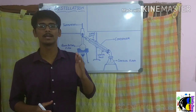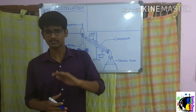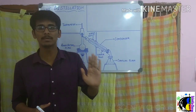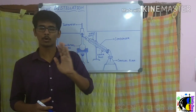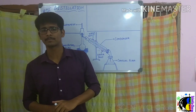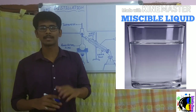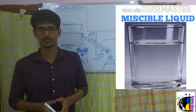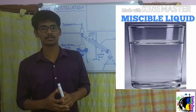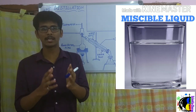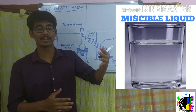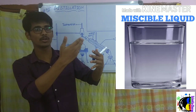Distillation is a process by which we separate out miscible liquids according to their boiling points. Miscible liquids are nothing but a homogeneous mixture, which consists of a uniform composition. We have a liquid which is a homogeneous mixture — that is, we cannot differentiate the components present in the mixture.